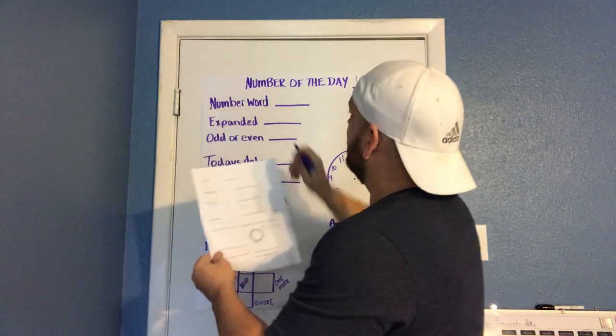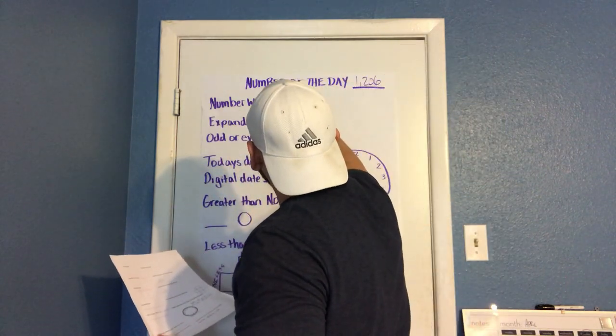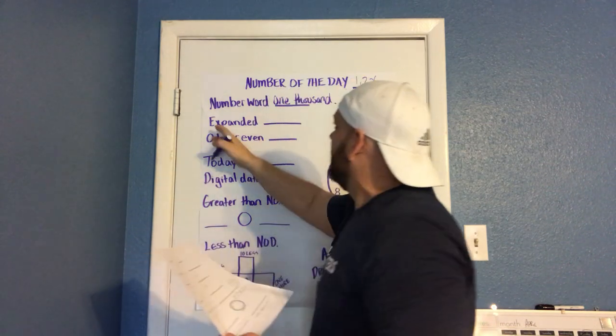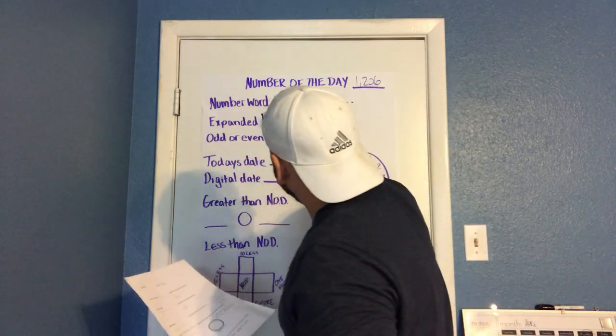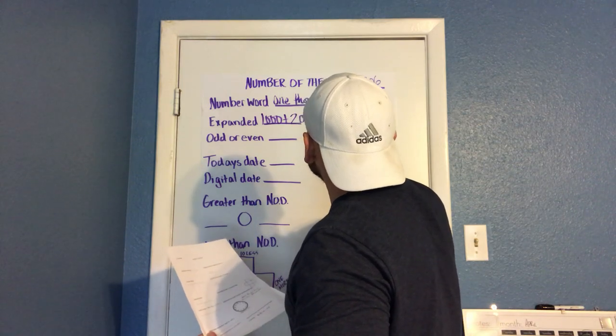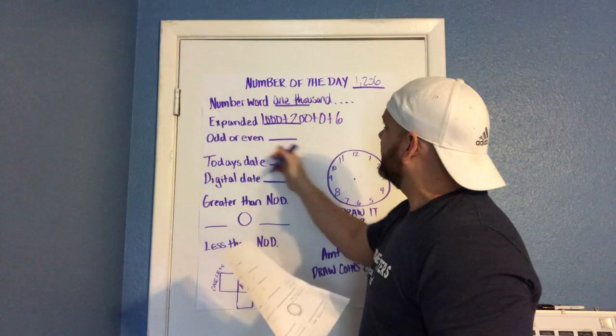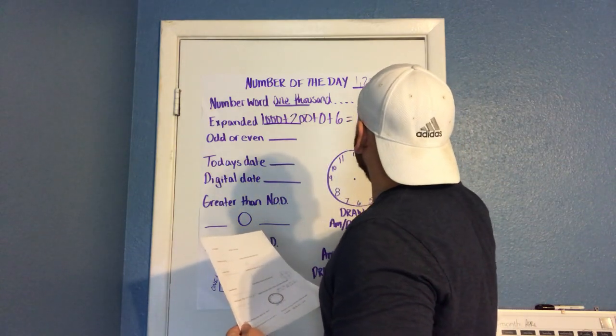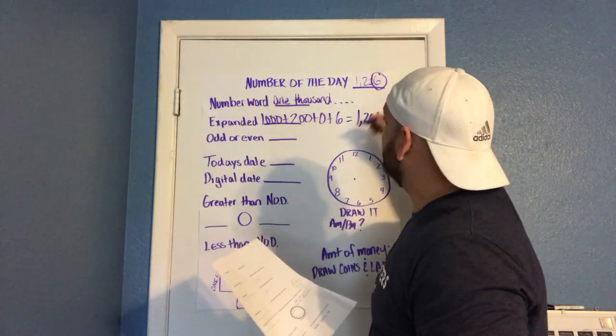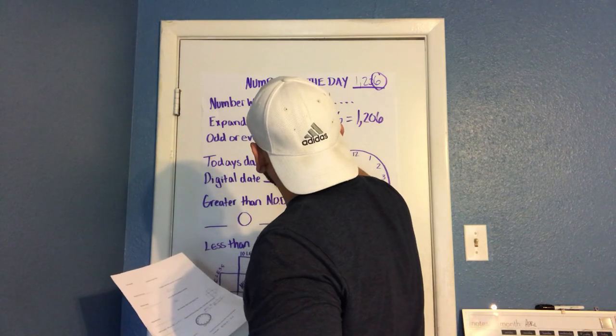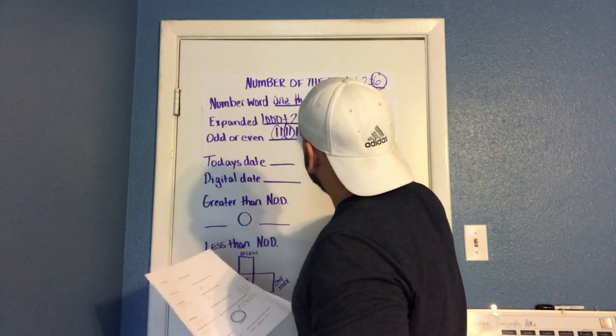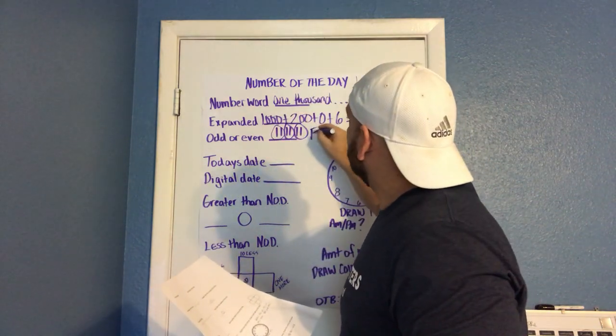This is all on their sheet. The number word is, I would write it out: 1,000, I'm not going to do the whole thing. The expanded form would be 1,000 plus 200 plus, some kids write zero, some just write the six. Odd or even, I teach them to use dance partners is what we call it. So we pick the last number here and we make little dance partners: they have a partner, they have a partner, they have a partner, everybody's got a partner, so we know that it's even.